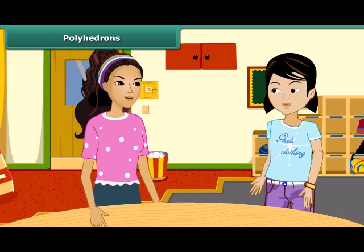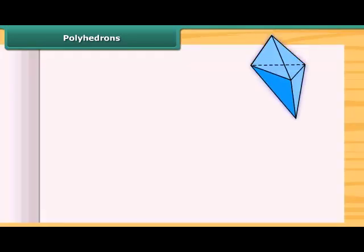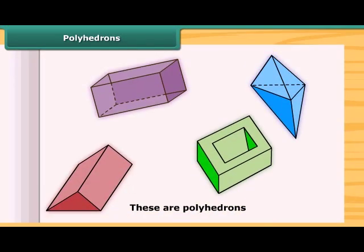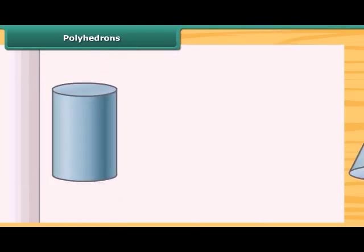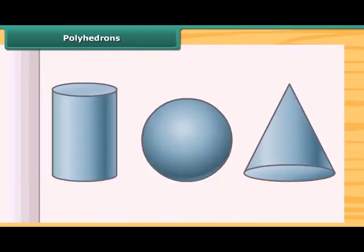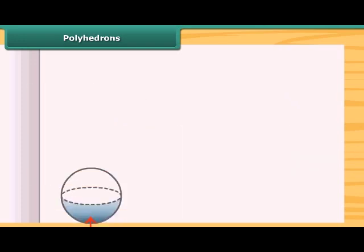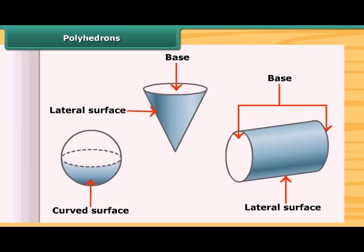Those solids are called polyhedrons. These all solids are polyhedrons. Are these objects polyhedrons? No, these are not polyhedrons. You are right. These are not polyhedrons because they do not have flat faces.